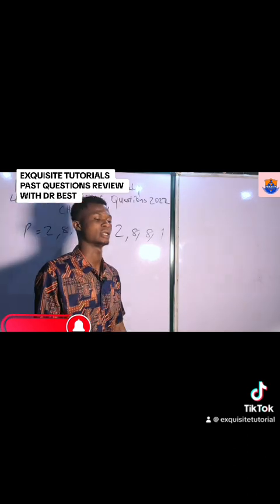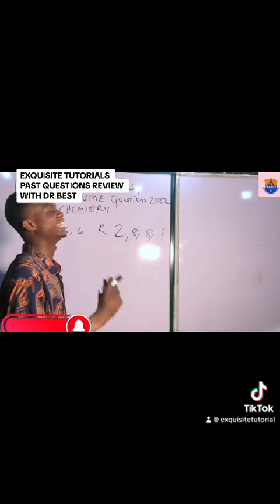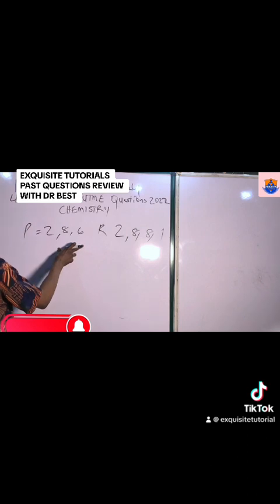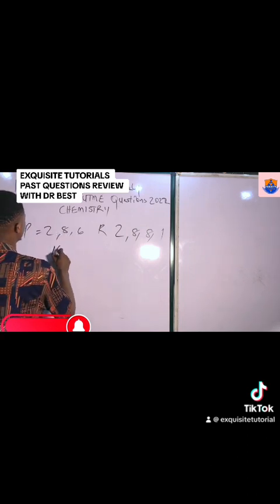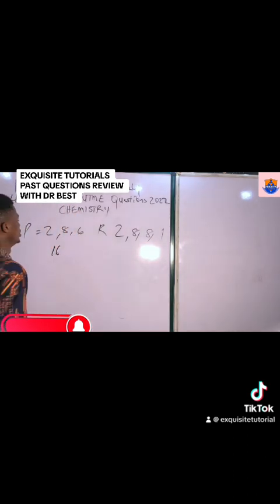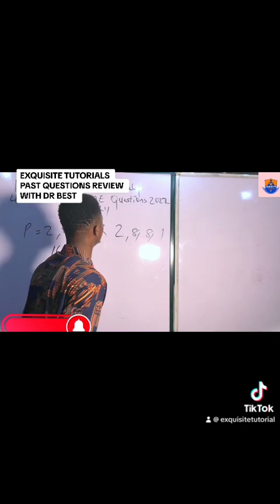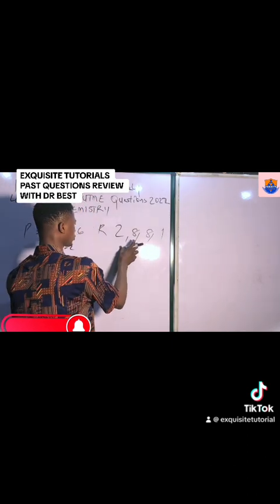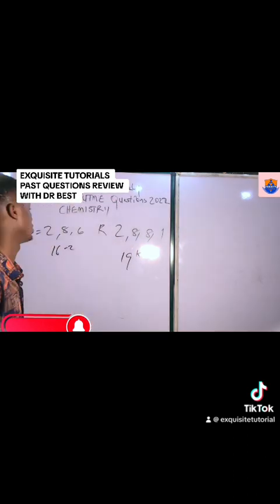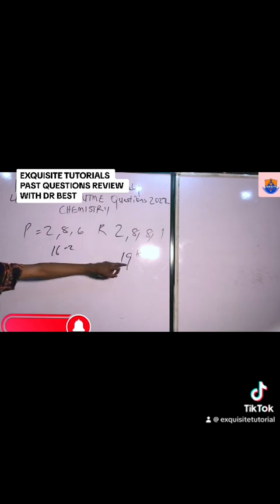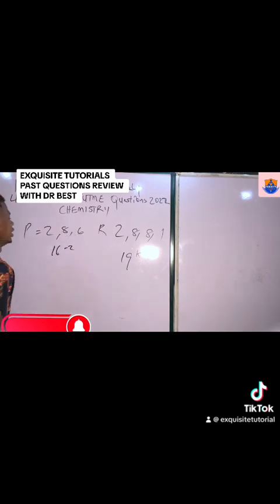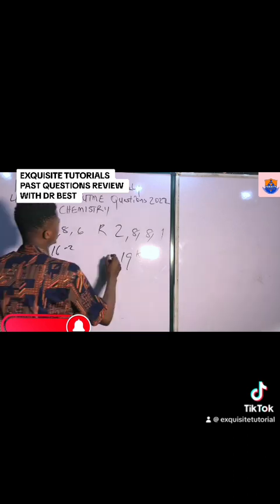This question is testing our understanding of electronic configuration and bonding — two concepts in one. For element P with configuration 2, 8, 6, the total is 16, so this element should be oxygen, which has a valency of minus 2. For element R with configuration 2, 8, 8, the total is 19, so this element should be potassium, which has a valency of plus 1.